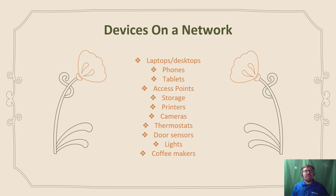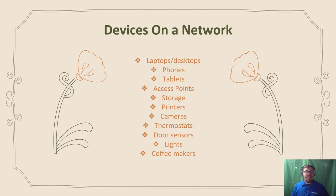You've got your things clients are using, like laptops or desktops — they're probably corporate. You've got phones, they could be corporate or personal BYOD, tablets, wireless access points, your storage, your printers, your cameras, smart office and smart house devices such as thermostats, door sensors, lights, even things down to coffee makers. Famously, there was a ransomware attack related to an internet-connected fish pump of all things.